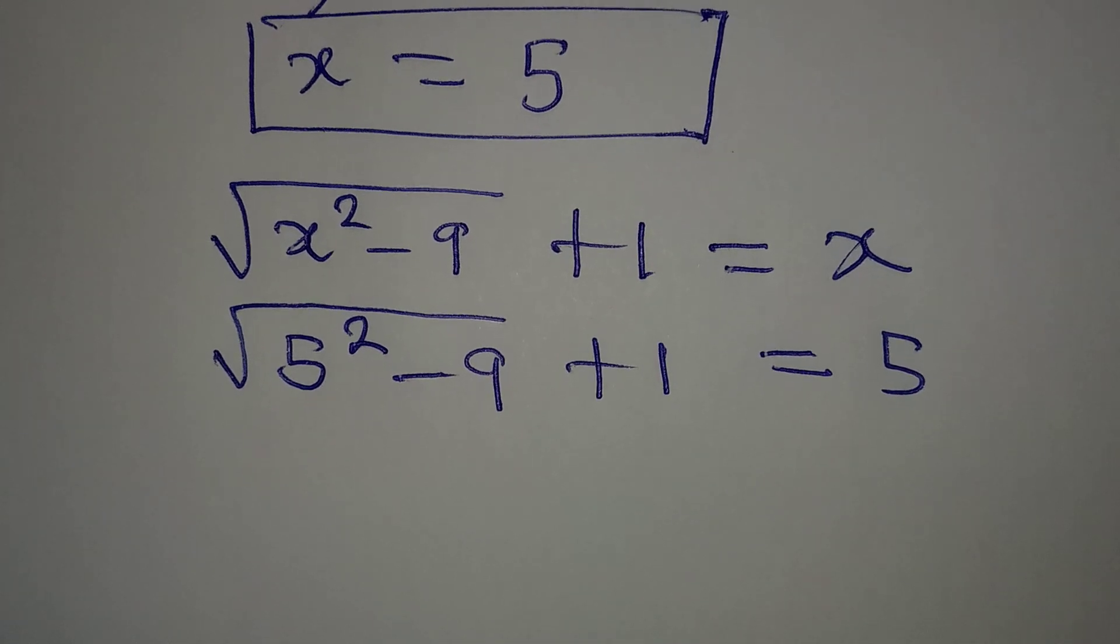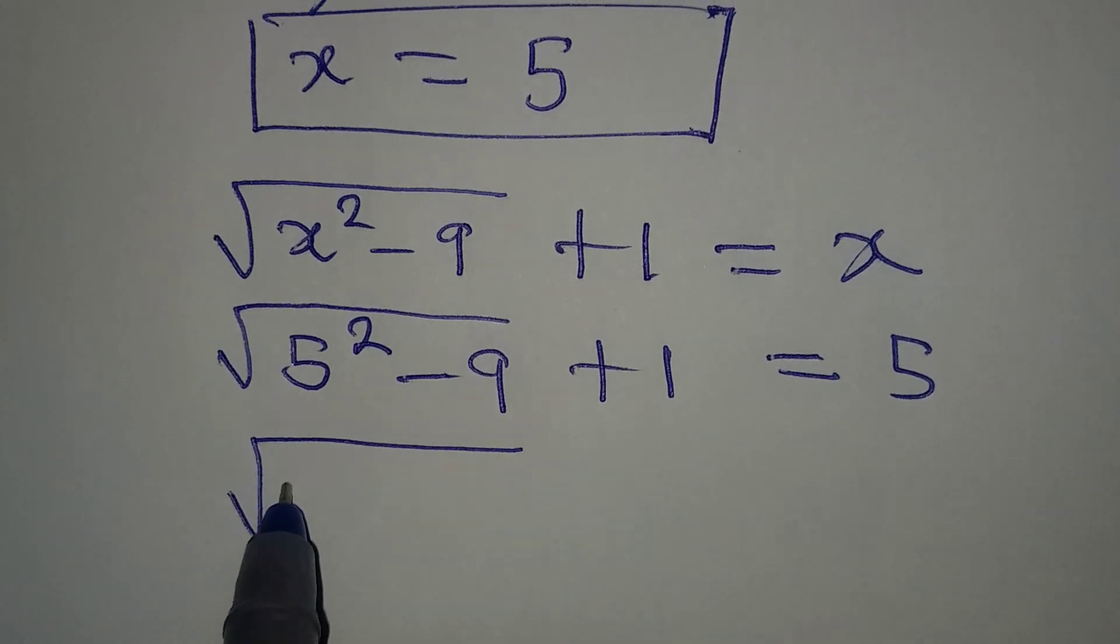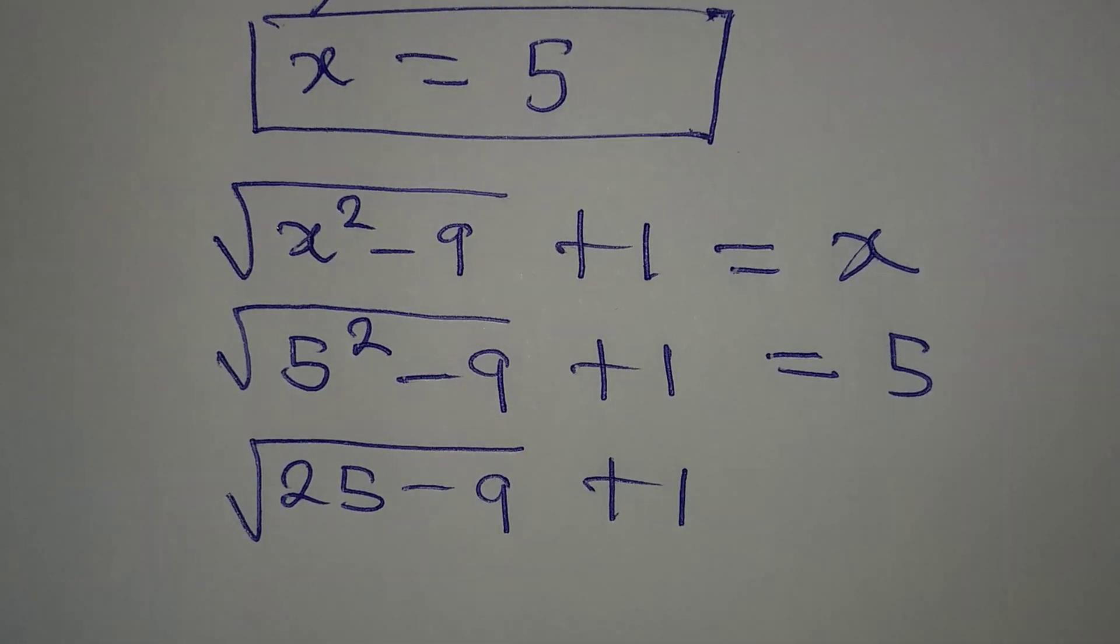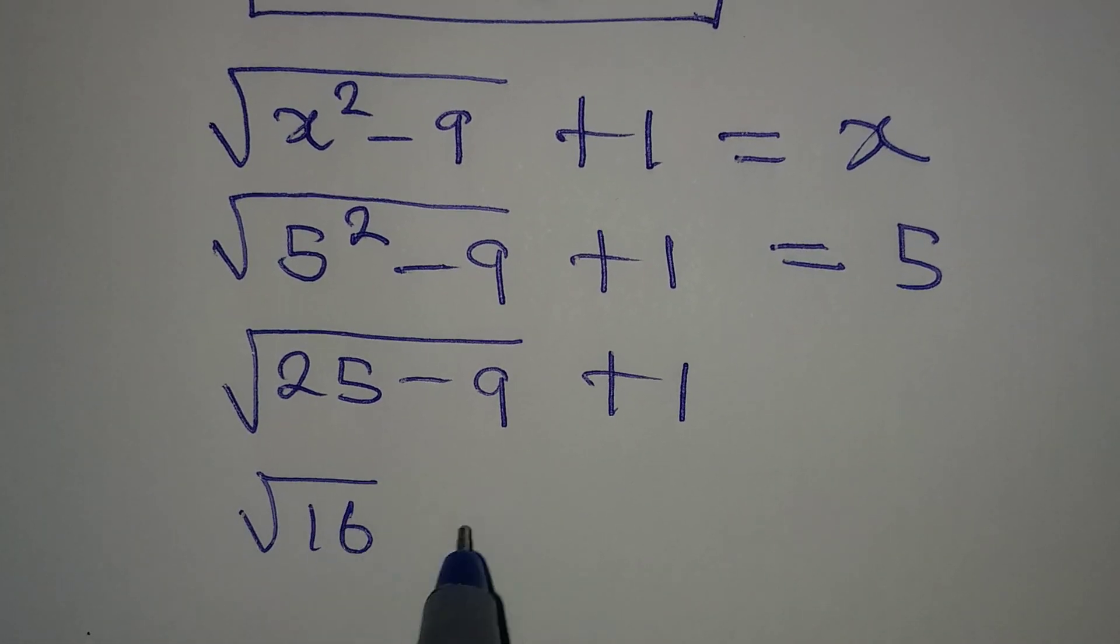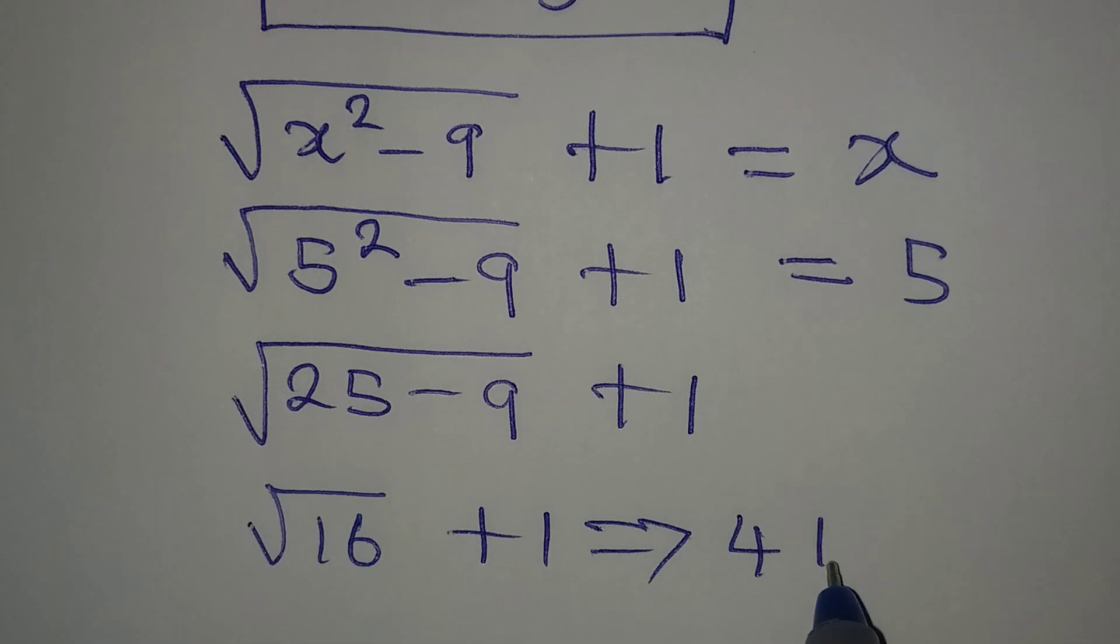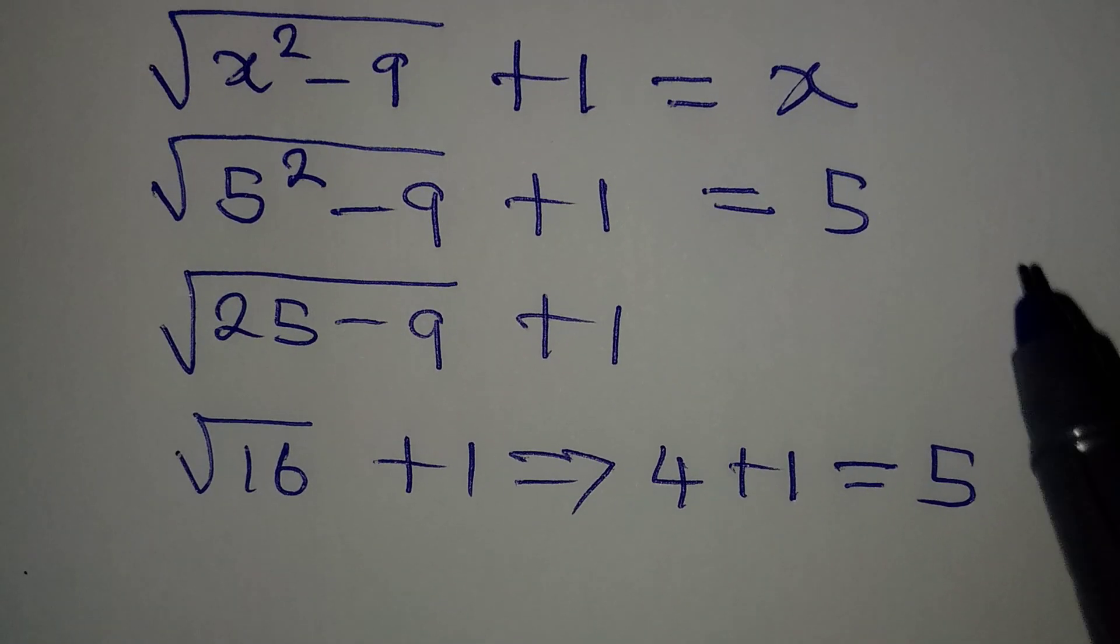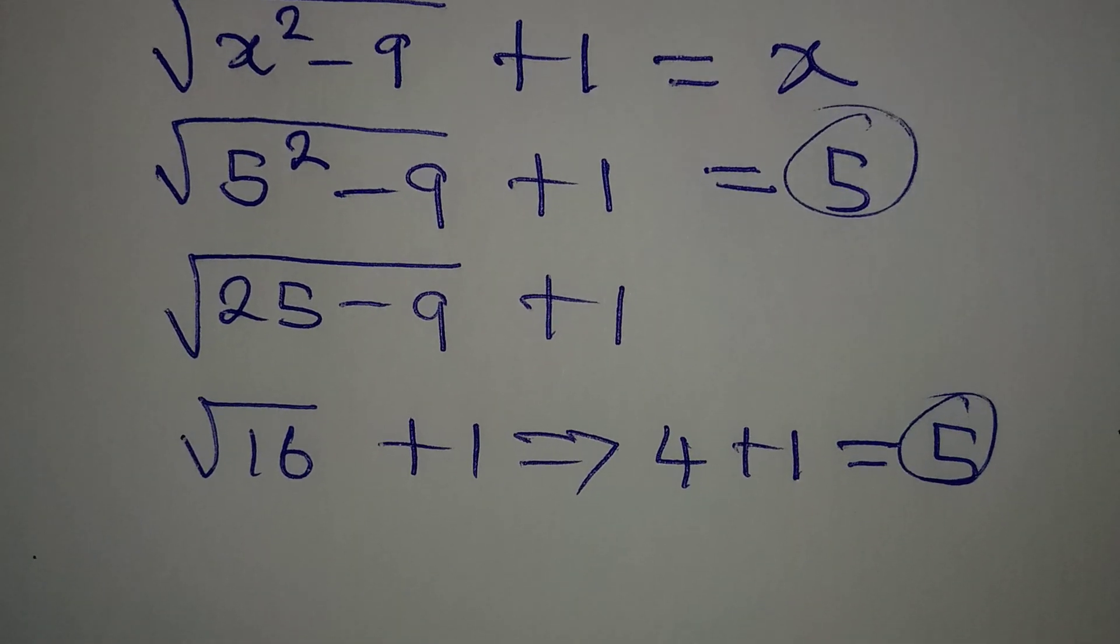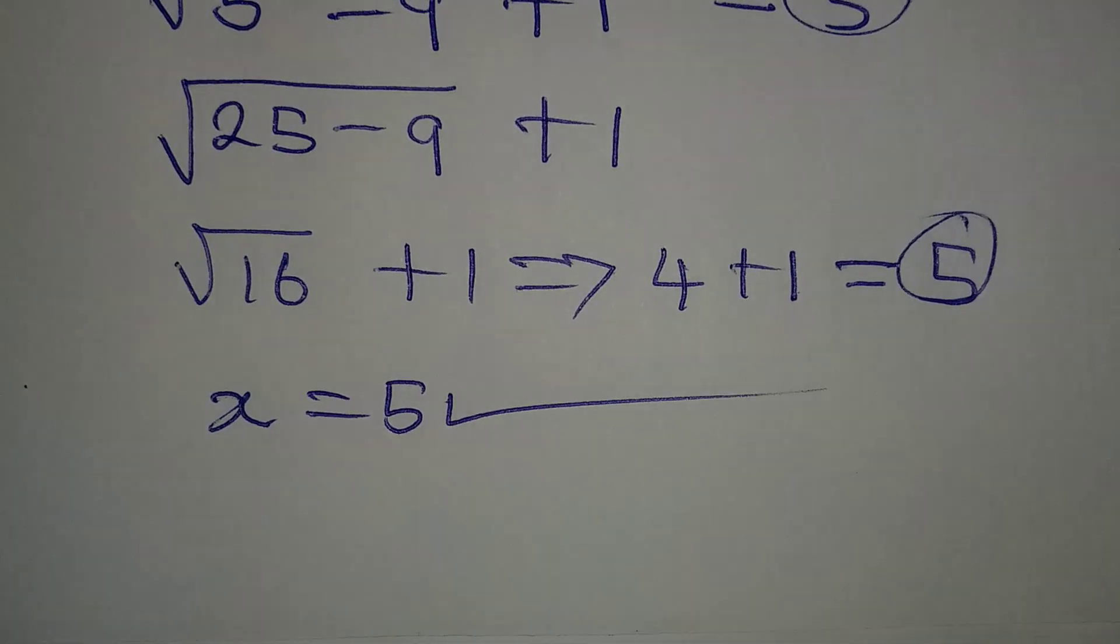Now, I will work on the left-hand side. This will be 5 squared is 25 minus 9, then plus 1. 25 minus 9 here will give me square root of 16, then we have plus 1. And by the way, square root of 16 is 4, so we have 4 plus 1. This is giving us 5. And remember, we had 5 on the right-hand side. So, we have confirmed that x equal to 5 satisfies the equation.